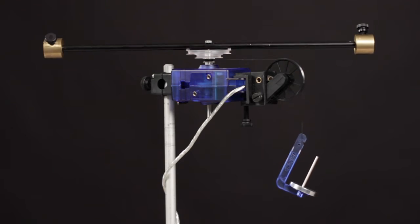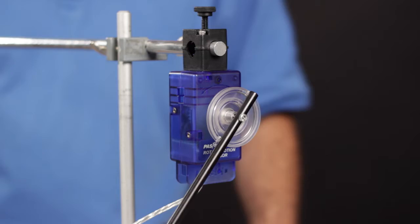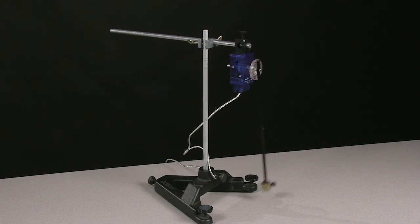Attach the center of the rod to the sensor's axle to investigate rotational inertia. Attach the end of the rod to the sensor's axle to investigate pendulum and oscillatory motion.